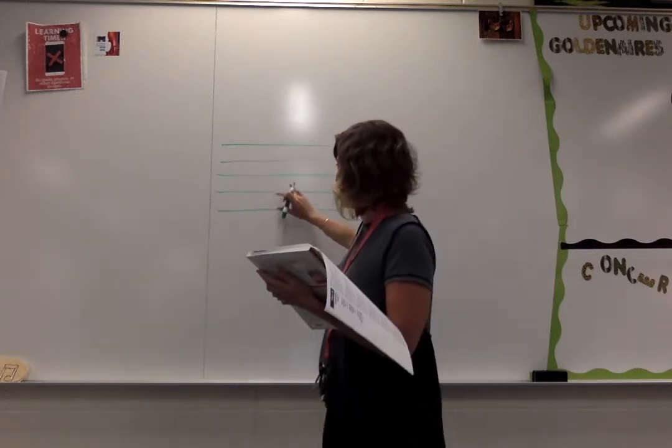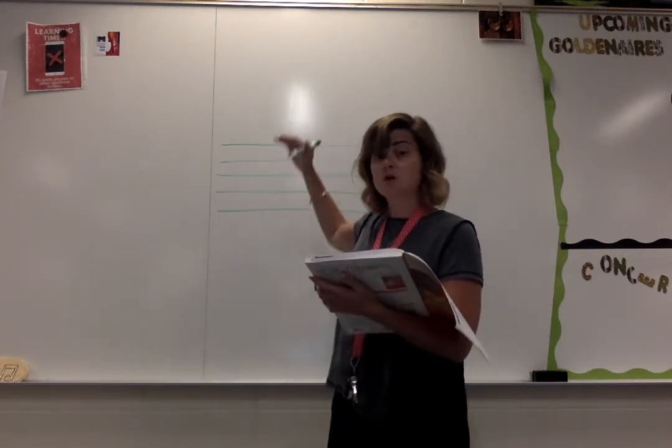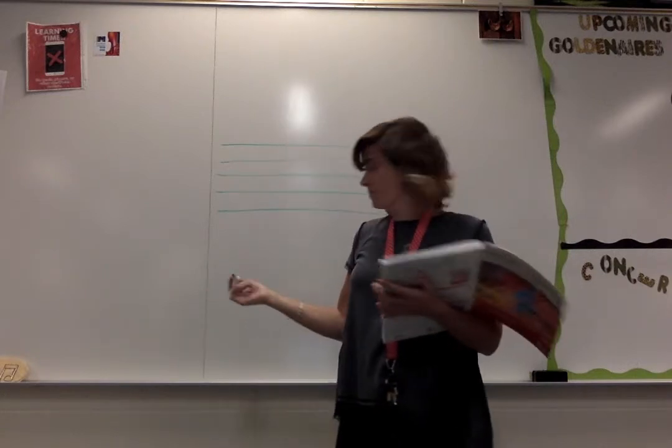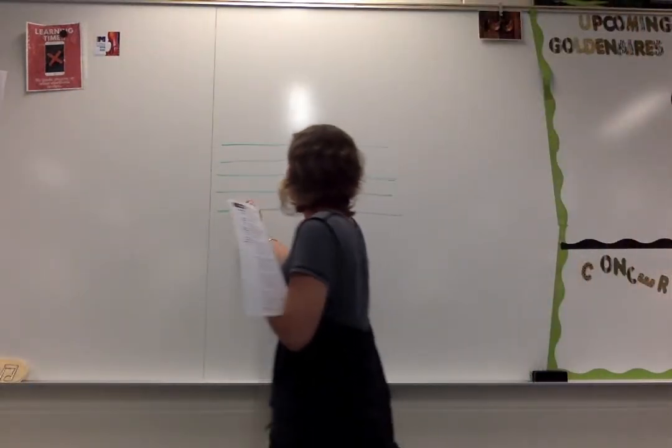The lines on the staff are numbered always from the bottom to the top. So smallest number on the bottom, biggest number on the top. So if I was going to number these, let me get a different color here. If I was going to number these, I would start with one on the bottom right here.